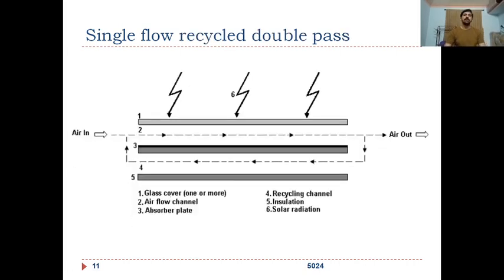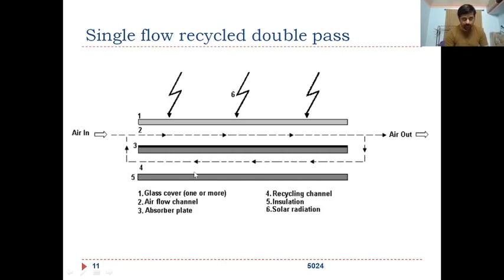In single flow recycled double pass, unlike the closed configuration of the previous type, this one is open. A certain portion of the heated air exits, and the remaining portion mixes with atmospheric air and goes back through the inlet, through the bottom of the absorber plate. It then mixes with fresh air again before going in, creating a recycling effect — which is why it is called recycled double pass.